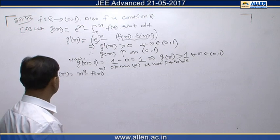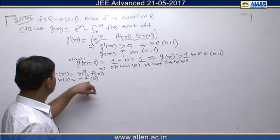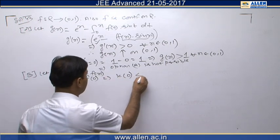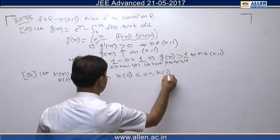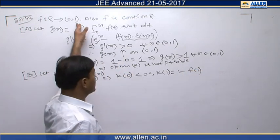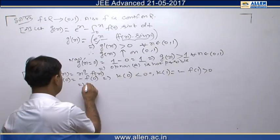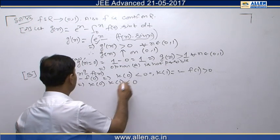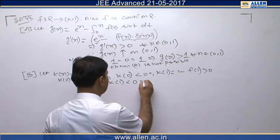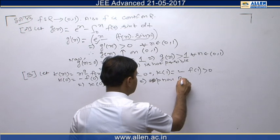This is a difference of two continuous functions. Checking k(0): it equals 0 minus f(0), which is negative since f(0) is in (0,1). Checking k(1): it equals 1 minus f(1). Since f(1) is between 0 and 1, subtracting it from 1 gives a positive value. Since k(0) is negative and k(1) is positive, their product is negative, and k(x) is continuous. By the intermediate value property, option B is possible.